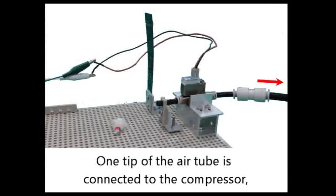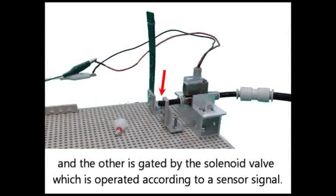One tip of the air tube is connected to the compressor, and the other is gated by the solenoid valve which is operated according to a sensor signal.